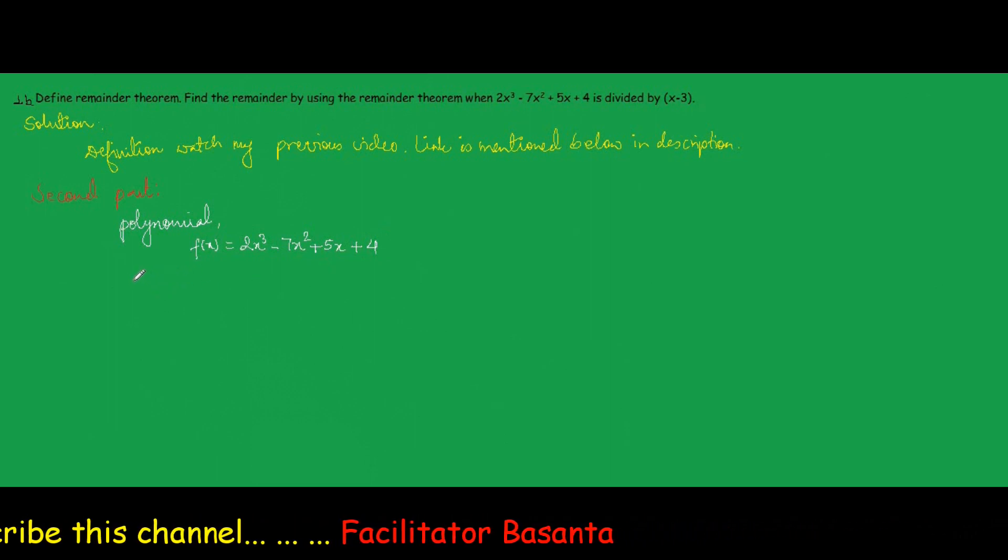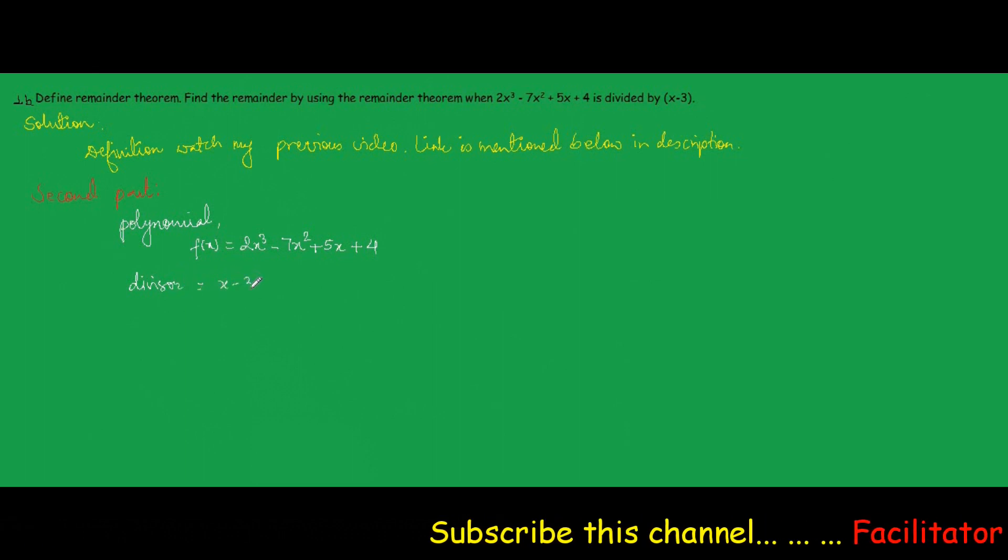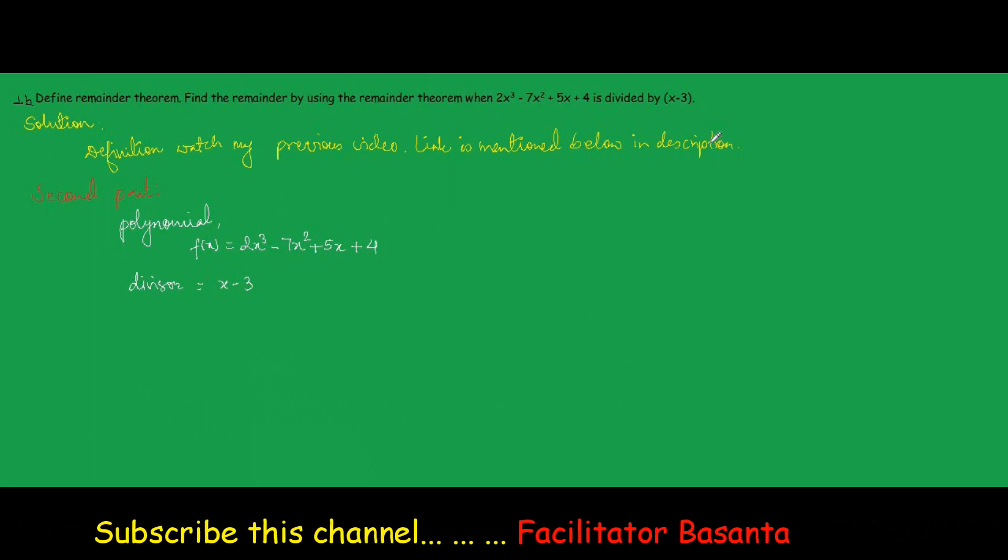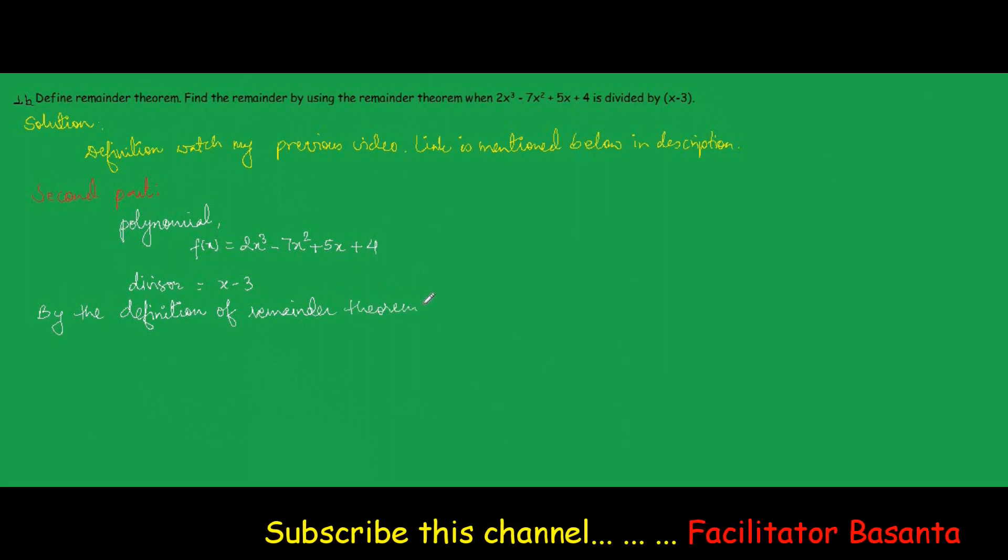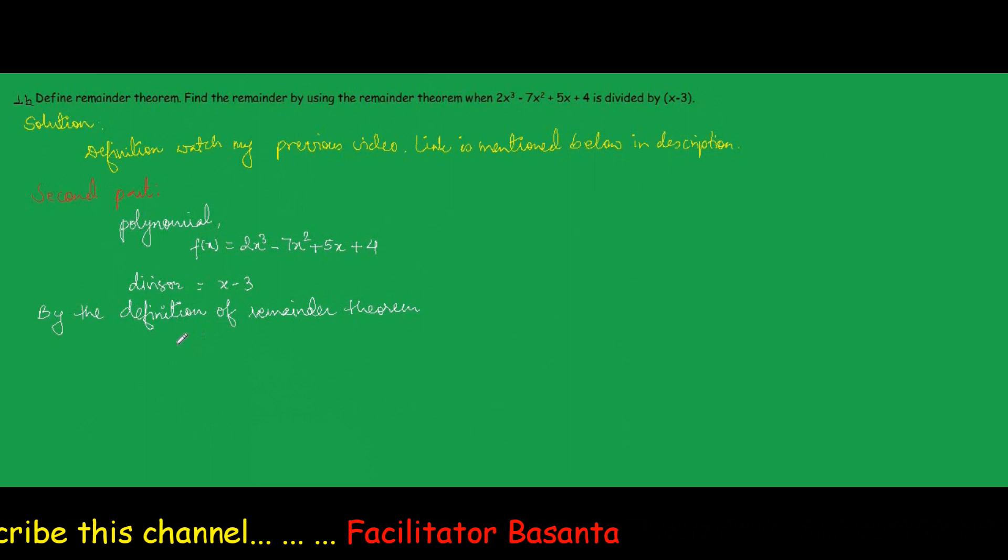And the divisor is x - 3. Now we need to find the remainder. According to remainder theorem, by the definition of remainder theorem, r = f(a).